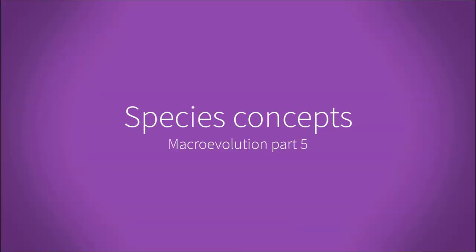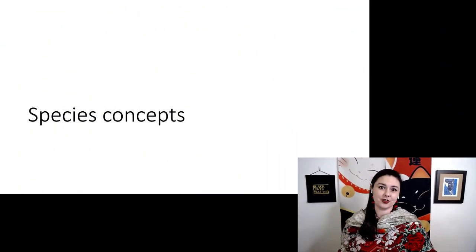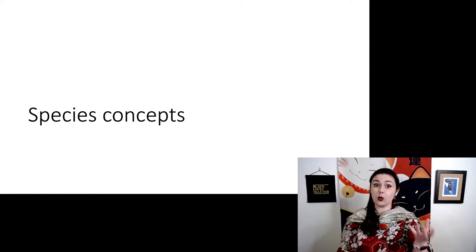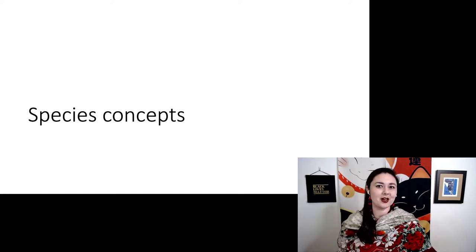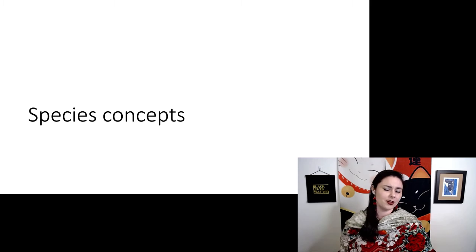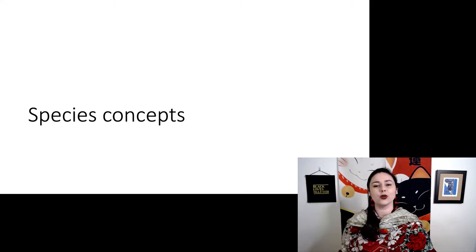Now that we talked about speciation and how species form, let's talk about how we identify what a species is. Species are the fundamental unit for evolutionary biology. They're how we look at how things change over time. We can follow one population or species, look at how it changes, and eventually it might become more than one species. But even though this is so fundamental and important, we don't actually agree on what these definitions are. When we're talking about how we define what a species is, we refer to that as species concepts.